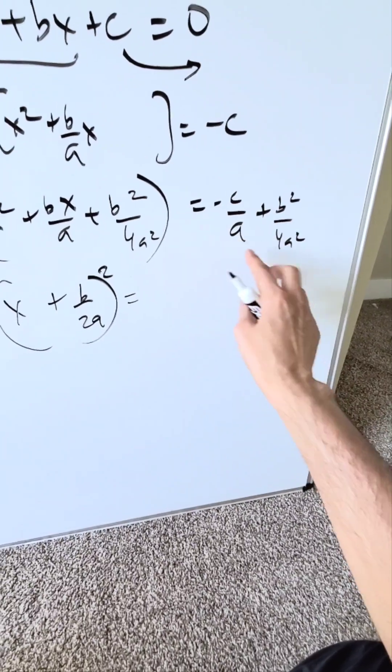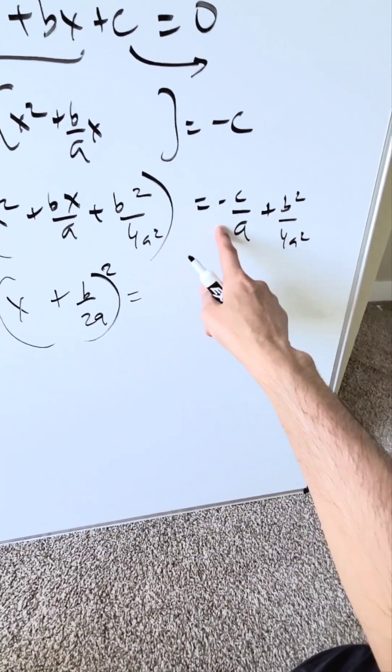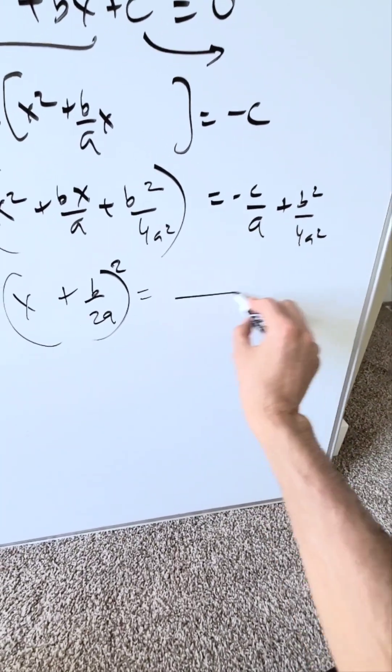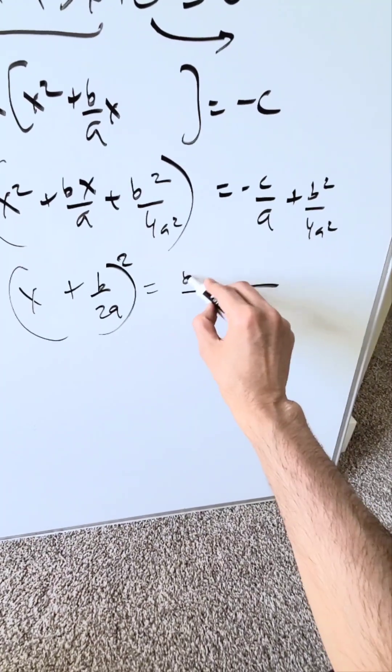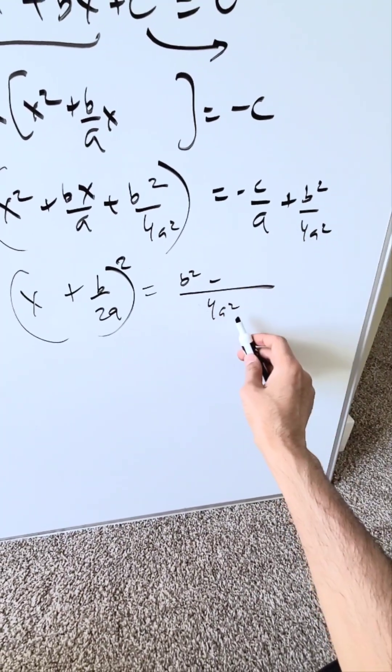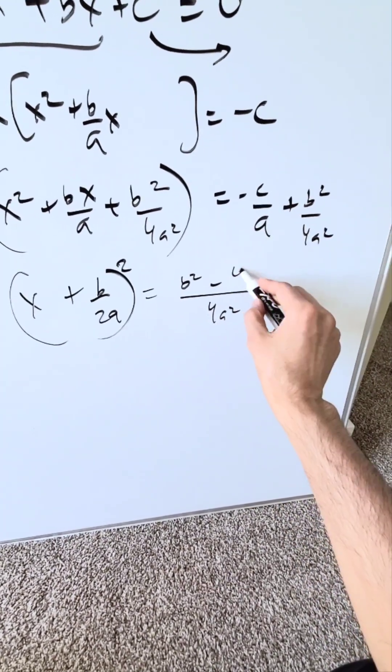I have b squared over 4a squared minus c over a. I'm looking at the positive term first, the negative term second. Common denominator has 4a squared. I have b squared. Minus a comes in here four times. It times with that c minus 4ac.